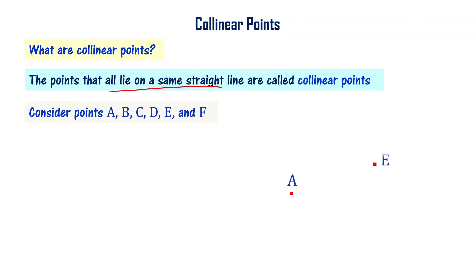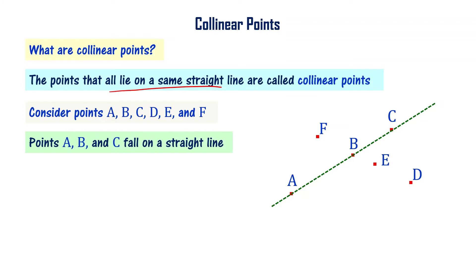For example, let us consider a few points A, B, C, D, E and F. It is a straight line that passes through A, B, C. In other words, we can say that A, B and C are falling on the straight line we have drawn just now. So we say that points A, B and C are collinear points.